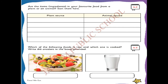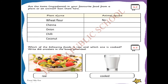Next, on page number 47, the next activity: are the items - the ingredients written on page 46 - from a plant or an animal? My favorite food is chapati with chenna masala. You have to sort what ingredients we are getting from the plants or from the animal. For plant source, we are getting: wheat flour, chenna, onion, chili, and coconut - all from the plant source.